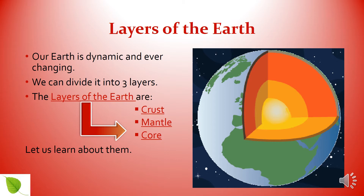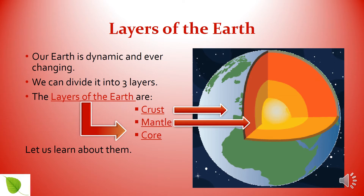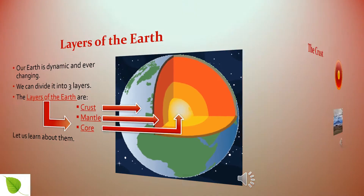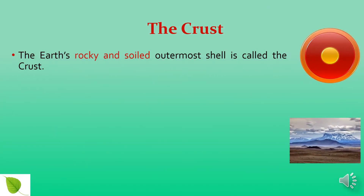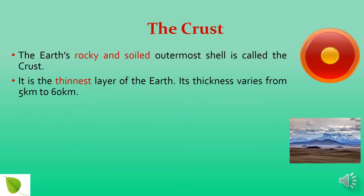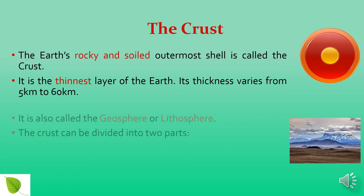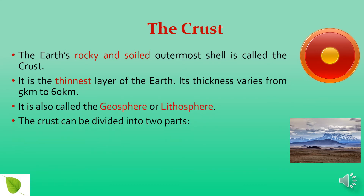The layers of the earth are crust, mantle and core. The earth's rocky and soiled outermost shell is called the crust. It is the thinnest layer of the earth. Its thickness varies from 5 km to 60 km. It is also called the geosphere or lithosphere.